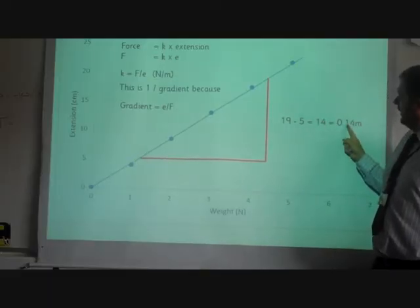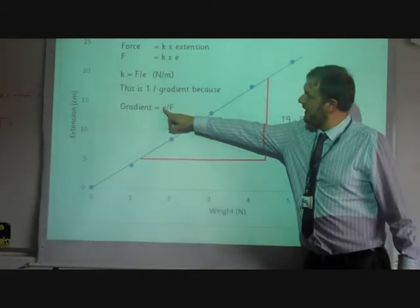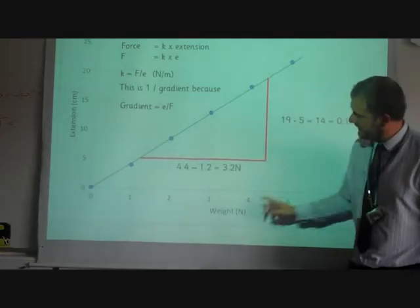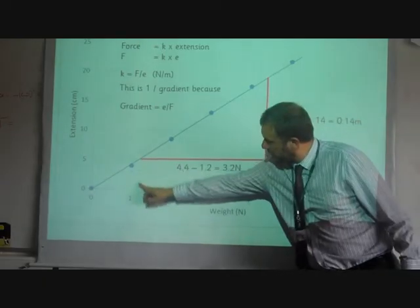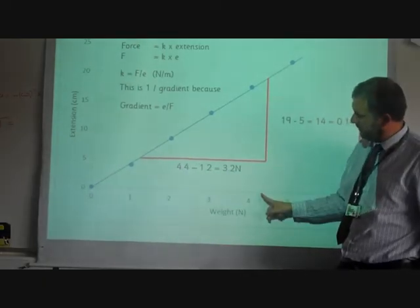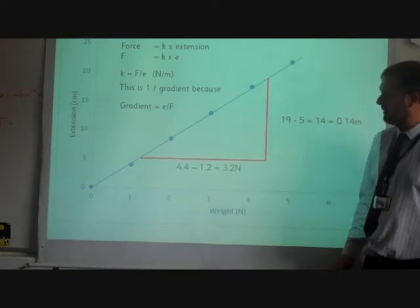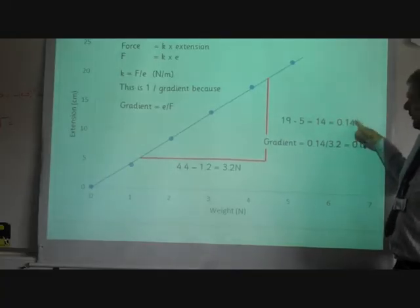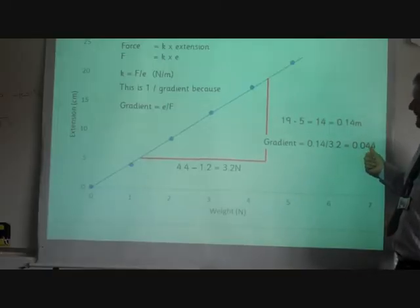So I've got a change in y of 14 centimeters, or a change in the extension of 14 centimeters. Down here on the x-axis, on the force axis, our weight, we're going from 1.2 to 4.4. So the change there is 3.2 newtons. So our gradient is 0.14 divided by 3.2, which gives us an answer of about 0.044. I've rounded that to the three decimal places.